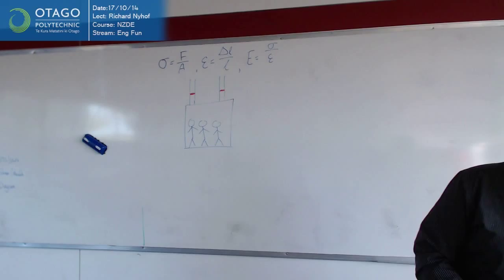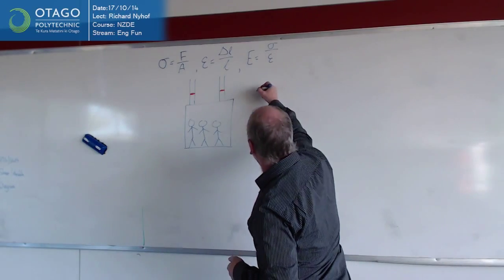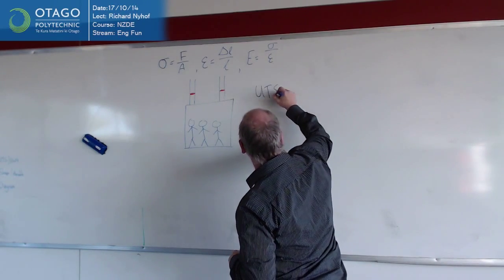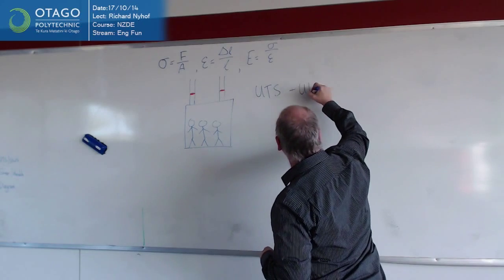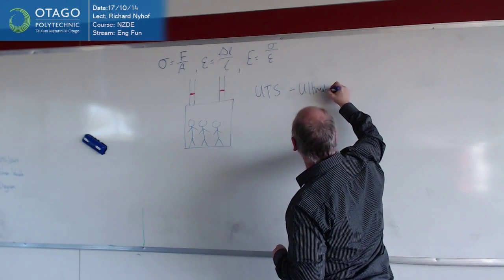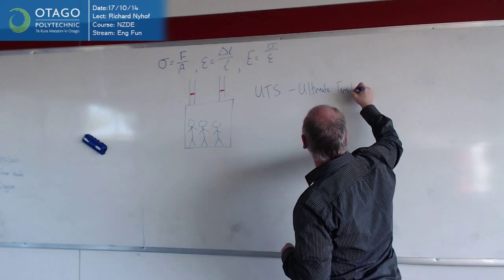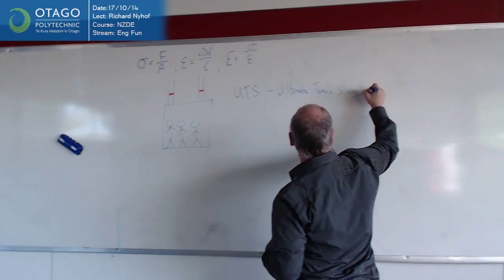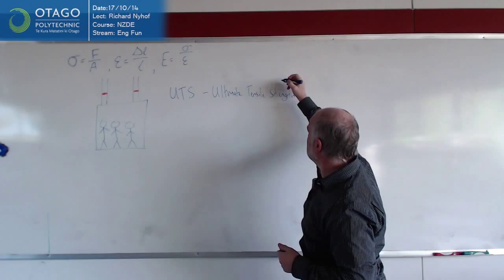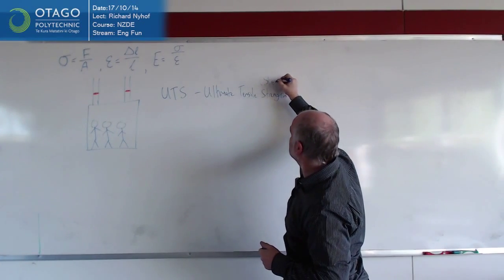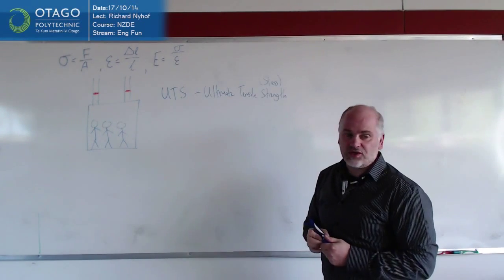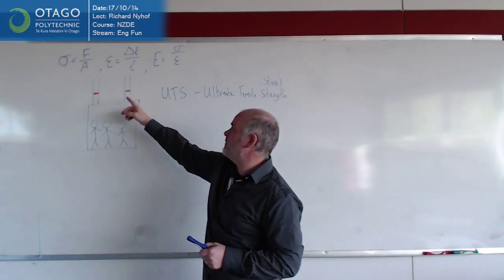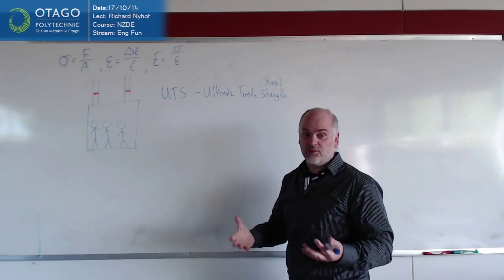There's a concept called ultimate tensile strength. UTS is how you always see it referred to. Ultimate tensile strength, or ultimate tensile stress, and this is the amount of stress that the materials, in this case the lift cables, can take before they actually break.